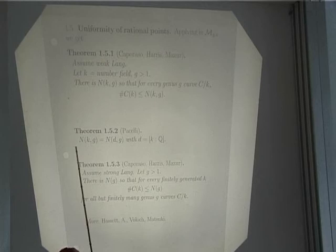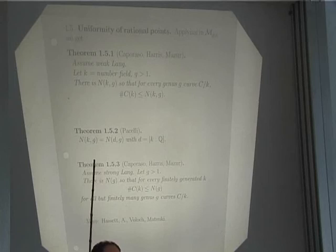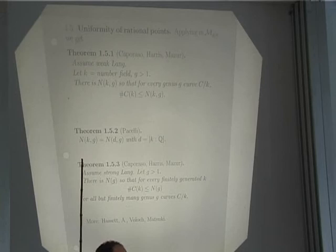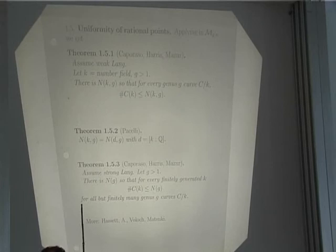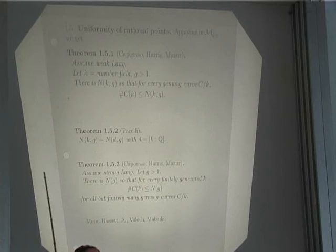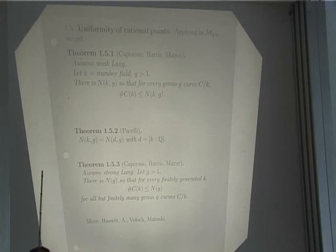Assuming strong Lang and fixing a genus, the Caporasso-Harris-Mazur theorem gives a uniform bound on the number of points on almost all curves: there is a bound depending only on the genus such that for any field K, the number of rational points is not more than this bound, except for finitely many genus G curves C over K. This is really wonderful, but there are many people who say Lang's conjecture cannot be true.